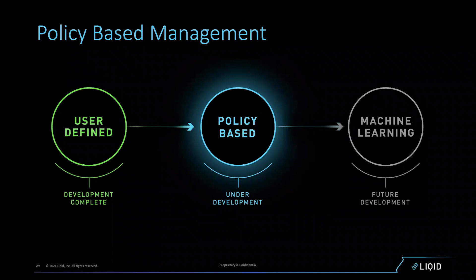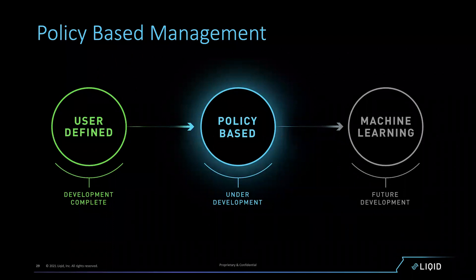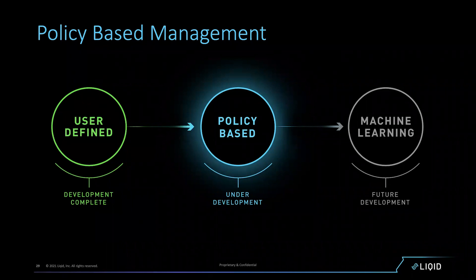Policy then evolves into machine learning, where humans are no longer setting how policies are controlled. We let machine algorithms study the usage patterns of hardware in the environment and let the machines control how infrastructure is reformulated. This is the machine-building-machine example — the final endpoint of how we get to a lights-out autonomous data center without any human interaction.